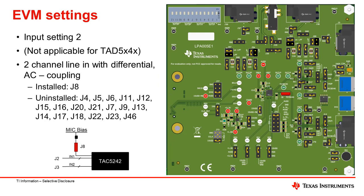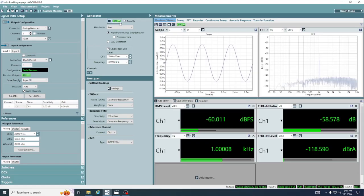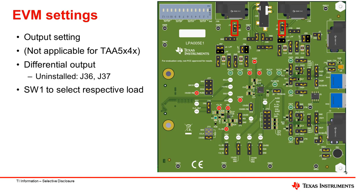For AC coupled differential line input, jumper JA will be the only jumper that needs to be shorted. Please leave the rest of them open. The screen shows the setting for measuring ADC dynamic range with differential line input. Channel 1 is now showing 118.5 dB dynamic range. The EVM analog audio output port provides options for AC or DC coupled and filter or filterless path for easy evaluations.